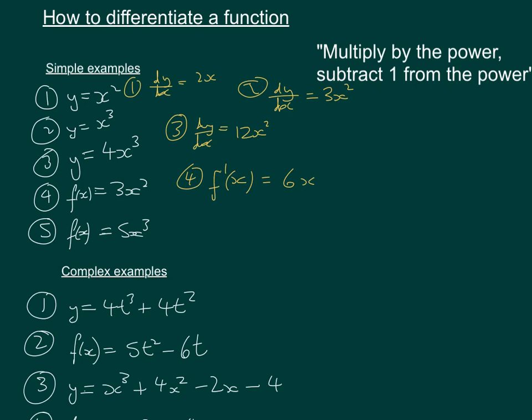And same for the fifth one. So the only thing that's different to the previous ones was the notation. So we've got f dash x. And that's going to give us 3 times 5, which is 15x squared.